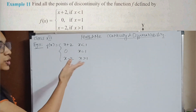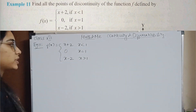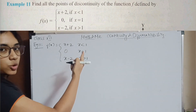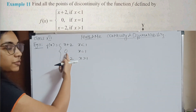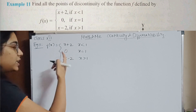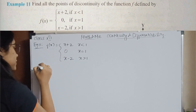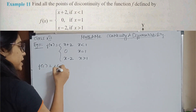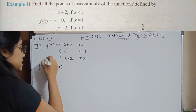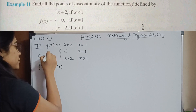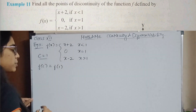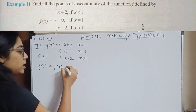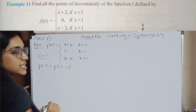Example 11. f of x is equal to the given piecewise function. At x equal to 1, they have given the value directly. So f of c — when c is equal to 1, the value of c is going to be 1. So f of c is f of 1 and the value is 0.